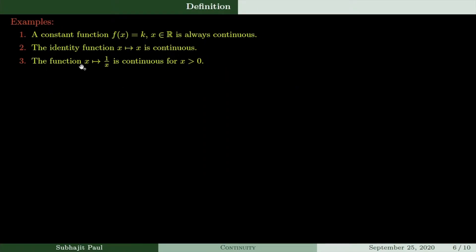The example is the function f(x) = 1/x, which is a continuous function for x greater than 0. So the domain of this function is all positive real numbers. Let c be a positive real number — we will be showing the continuity of the function at the point c. Let c be an arbitrary positive real number, and choose epsilon greater than 0 arbitrarily.